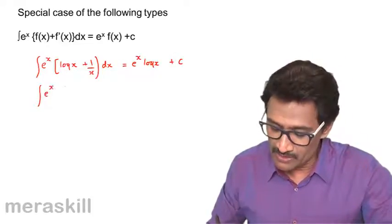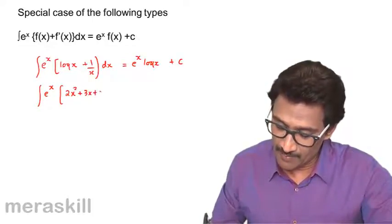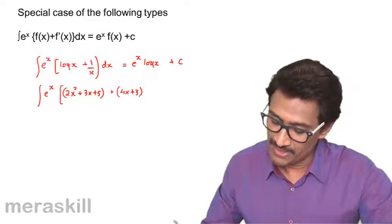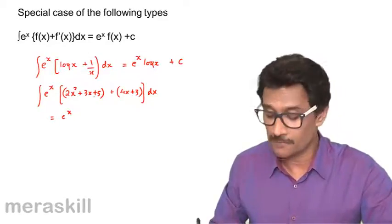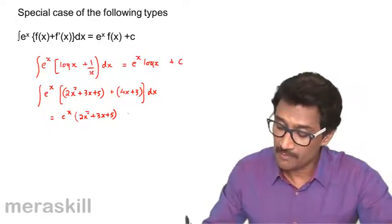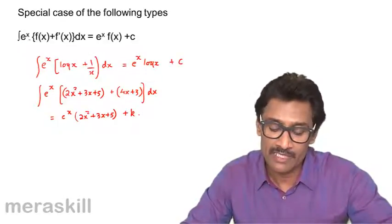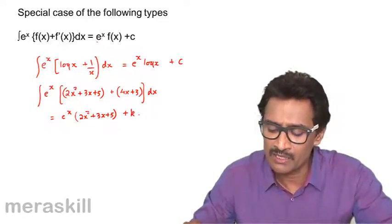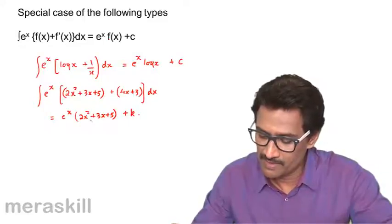Suppose it is e raised to x into [2x² + 3x + 5] plus [4x + 3], all times dx. This is nothing but e raised to x into 2x² + 3x + 5 plus C, since the second part is the differential of the first. So whenever we have e raised to x times the sum of a function and its differential, the result is e raised to x times that function.